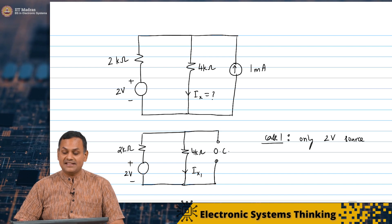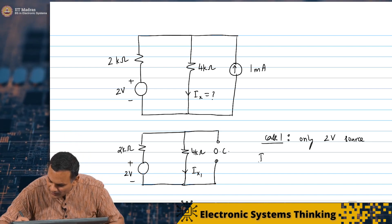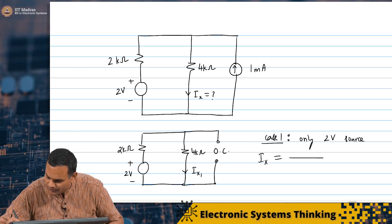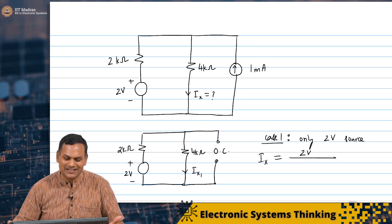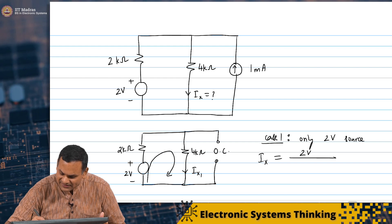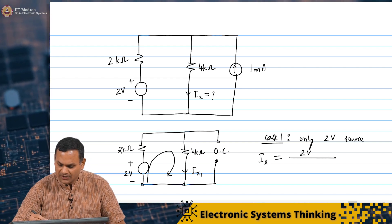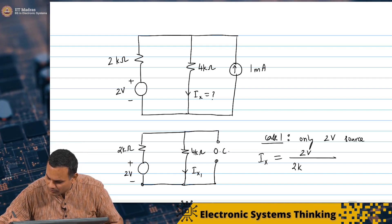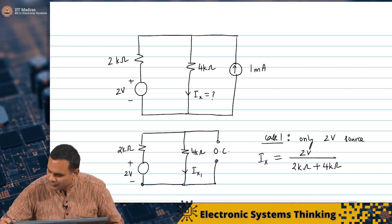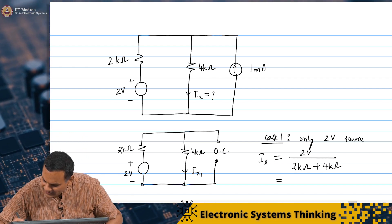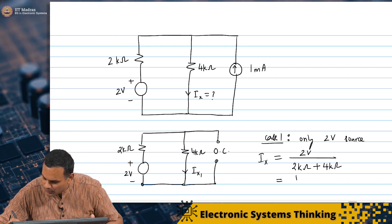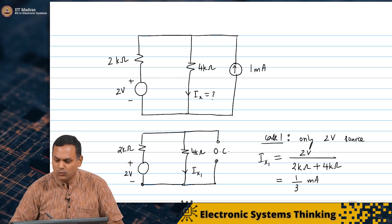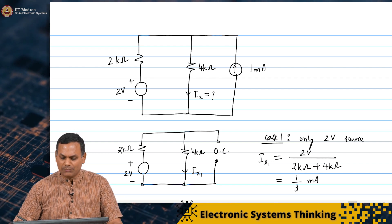What is the current through the 4 kilo ohm resistance? IX1 is nothing but 2 volts over the sum of the 2 resistances. You simply apply mesh analysis starting from here and coming back here. The current through the 4 kilo ohm resistor is 2 volts over 2 kilo ohms plus 4 kilo ohms, which is 2 by 6, or 1 by 3 milliamperes. So IX1 is 1/3 milliamperes.